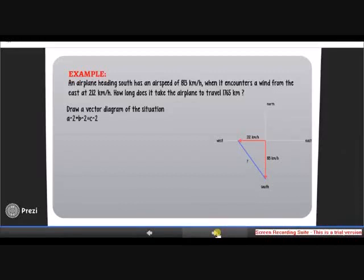Using the Pythagorean theorem, 813 squared plus 212 squared equals V squared. Solving for V gives 840.19 km per hour. Now we have the speed and can find how long it takes.